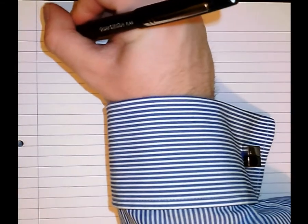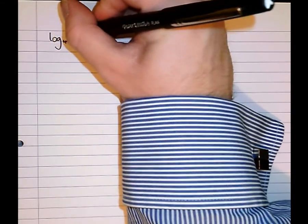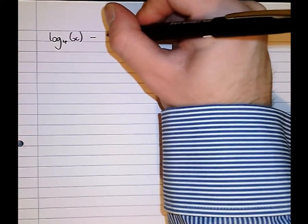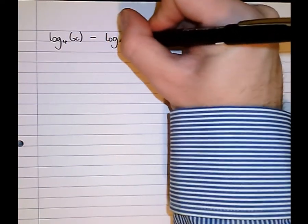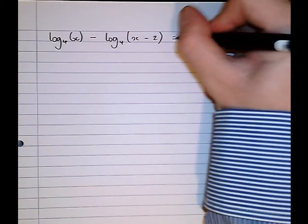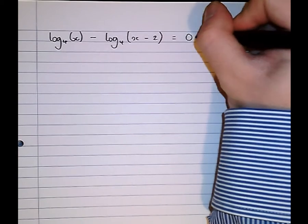So let's do another. Let's make it a little bit more complicated now. Let's do log to the base 4 of x take log to the base 4 of x minus 2 equals 0.7.